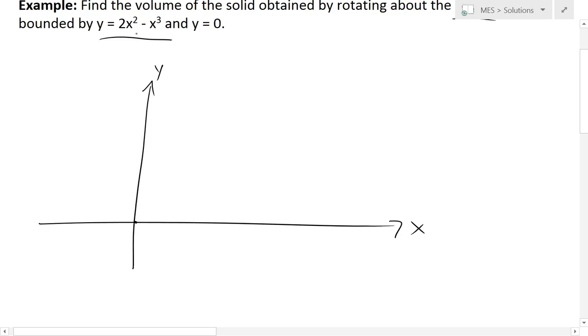And then as you increase, initially the 2x squared is bigger than the x cubed, so you're going to get something like this.